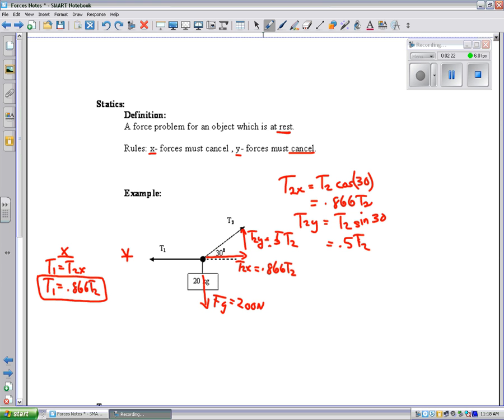For the y side, my y forces cancel. My two y forces are Fg of 200 and T2y. So, Fg equals T2y, which means 200 equals 0.5 T2. Now, this one I can solve because I only have one unknown, T2. If I divide by 0.5, I get 400 equals T2.